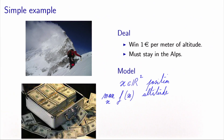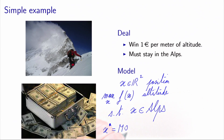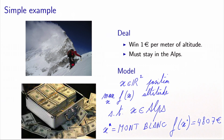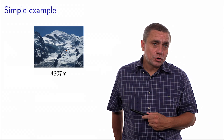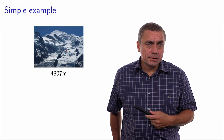The constraint is that the alpinist must stay in the Alps. The optimal solution of this problem is to climb Mont Blanc, which is the highest mountain in the Alps. The value of the objective function in this case would be 4,807 euros — that is, Mont Blanc at 4,807 meters high.